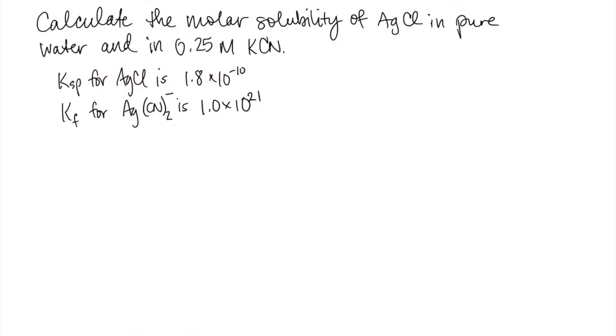Hello students, it's Dr. Sansom here. I wanted to do another example where we have a simultaneous equilibrium, this time with a Ksp and a Kf. So we have AgCl, and we're asked to calculate the molar solubility in pure water, that's our Ksp, and then in 0.25 molar KCN. That's our simultaneous equilibrium because we can also form this complex ion, Ag(CN)2 minus.